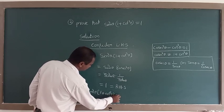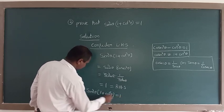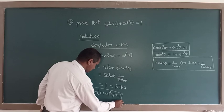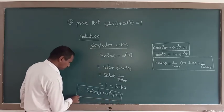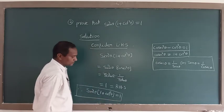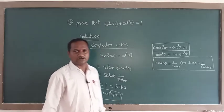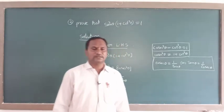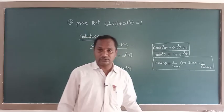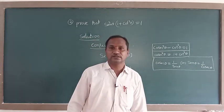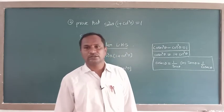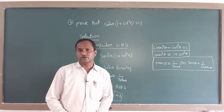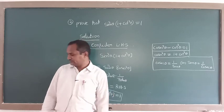Therefore the final answer is: sin squared theta into 1 plus cot squared theta equals 1. That is the solution for this question. Next we are going to solve some more questions.